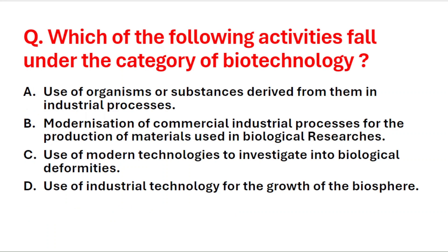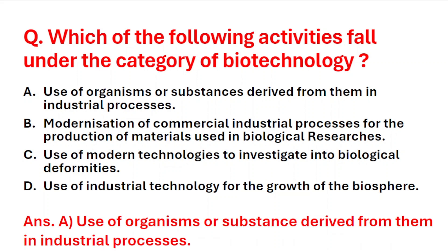Next question: which of the following activities fall under the category of biotechnology? A: use of organisms or substances derived from them in industrial processes, B: modernization of commercial industrial processes for biological research materials, C: use of modern technology to investigate biological deformities, D: use of industrial technology for the growth of the biosphere. The right answer is option A — use of organisms or substances derived from them in industrial processes.